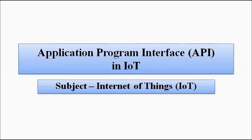Hello friends, welcome to Engineering Tutorial. So far in our discussion related to the Internet of Things, we have covered the communication models — the four types of communication models. In this video, we are going to discuss another important concept associated with IoT, which is the Application Program Interface, or API.